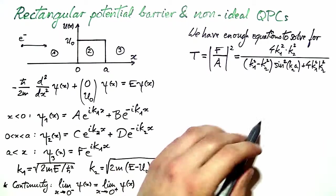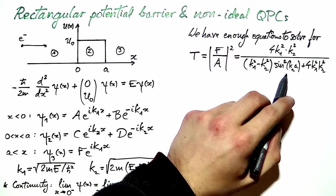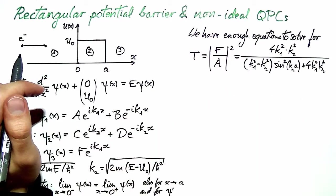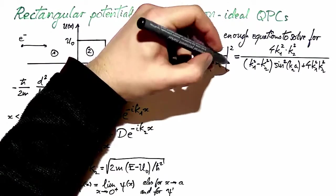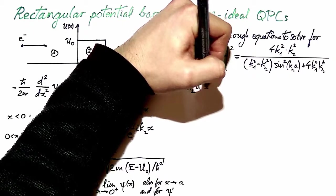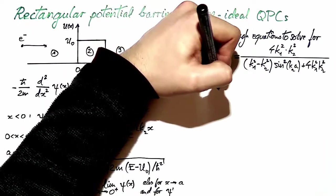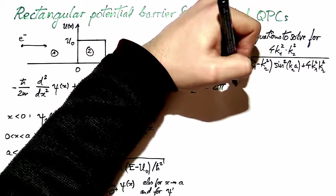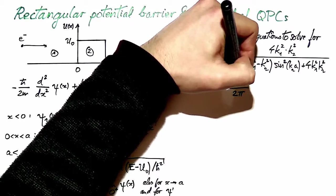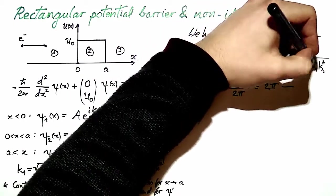And by solving for t, I get the following expression, in which I can see that the denominator has a term periodic in k2 times a. I can simplify this expression by noting that the term k2a is actually 2π times the ratio of a and the de Broglie wavelength. In fact, the de Broglie wavelength is given by 2π over k2.